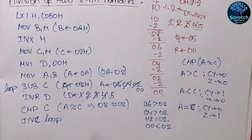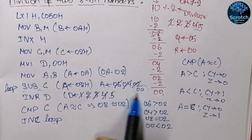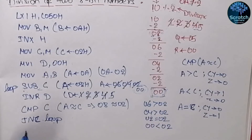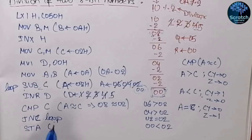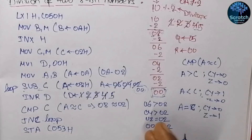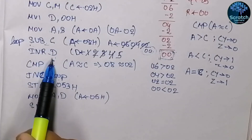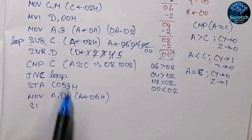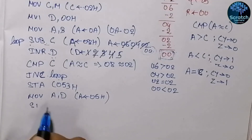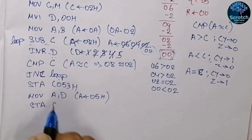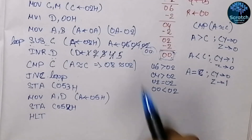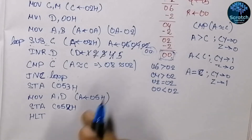In the next statements we store the results. The remainder is already in the accumulator, so we directly store it into a memory location. The quotient is stored in register D, so we move it to the accumulator using MOV A, D, then store it into the next memory location. Then HALT. This completes the division program.